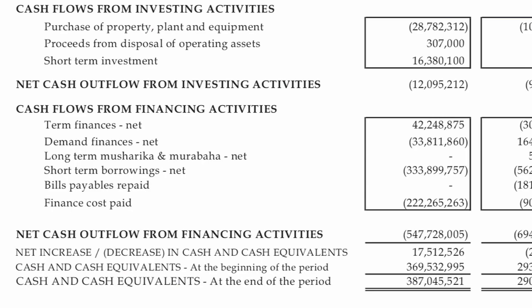The next major section is the cash used or provided by investing activities. This would include, for banks for example, loans made or loans repaid. For other companies, it would show any investments in fixed assets.